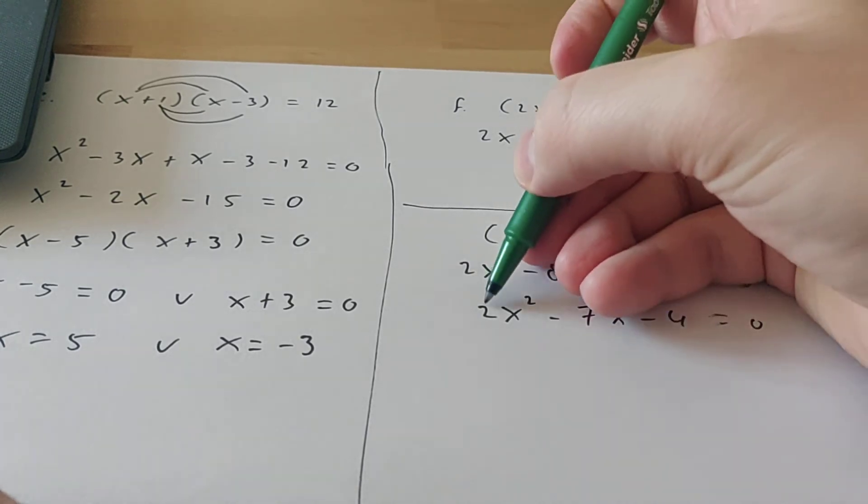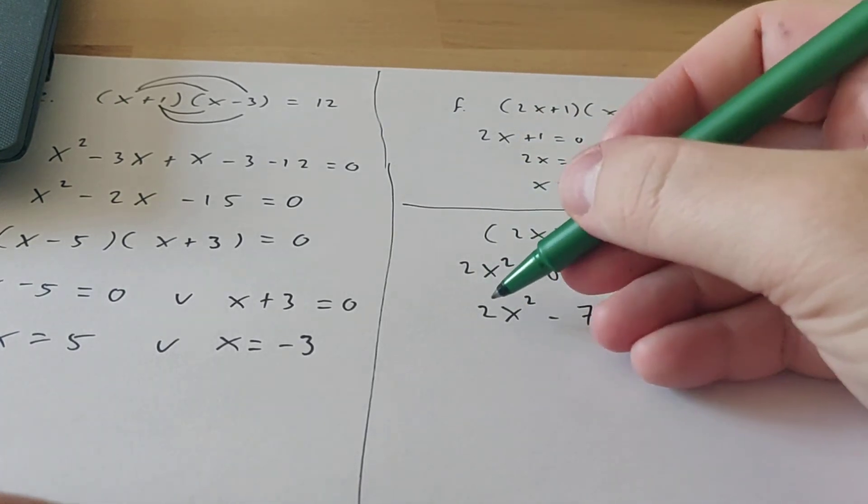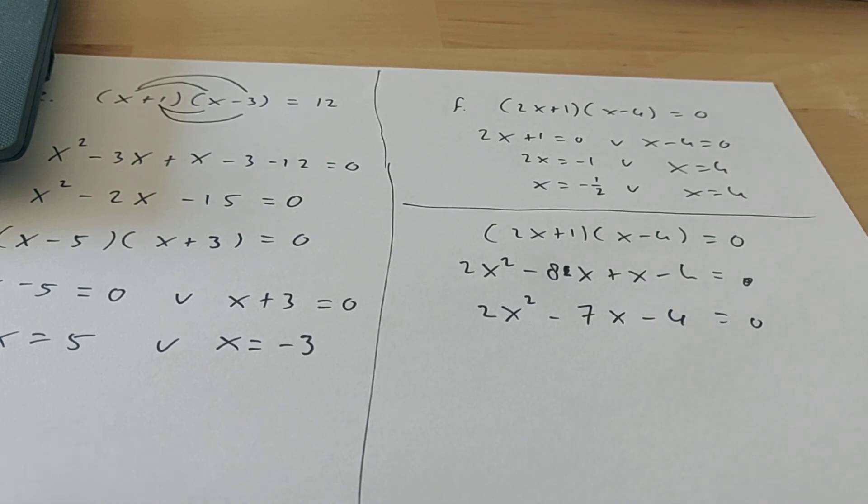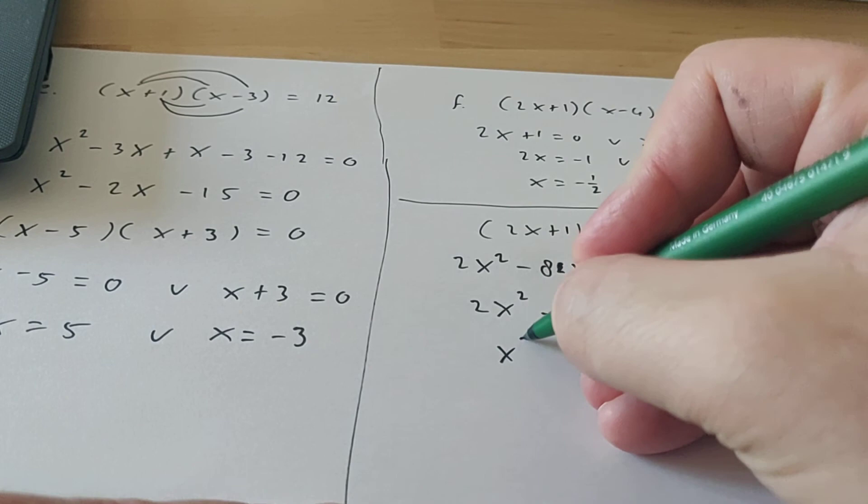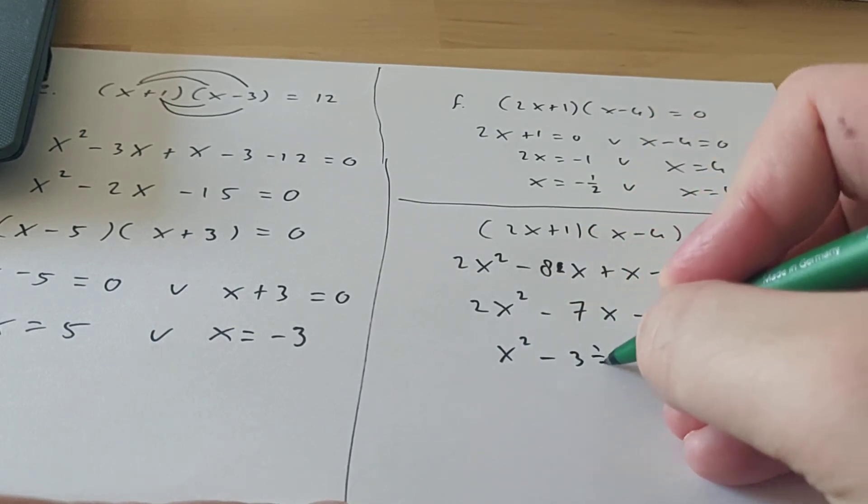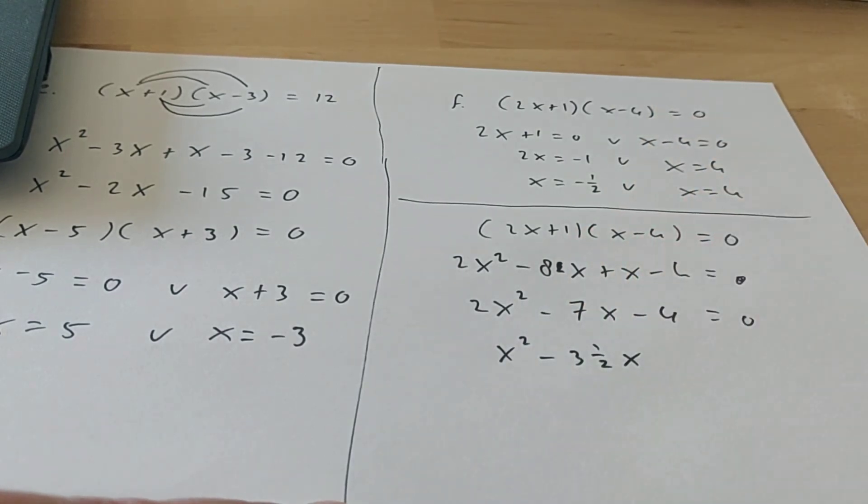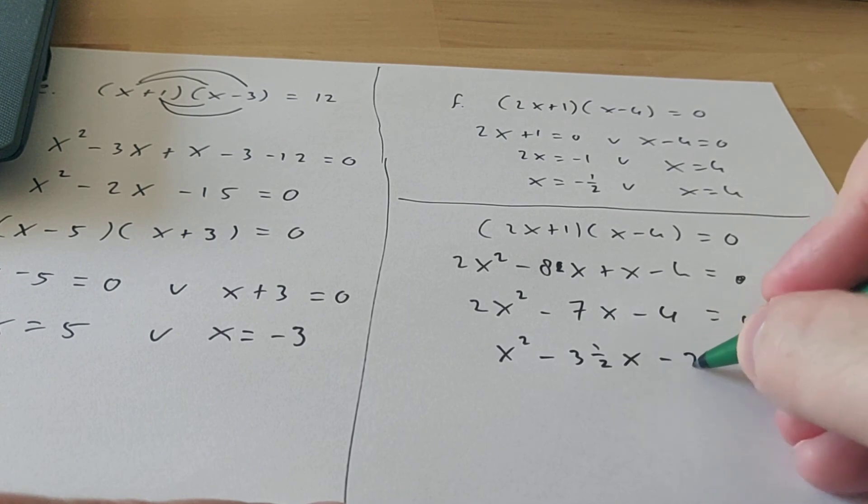Now because there's a 2 here, we cannot use the product sum method. So we have to divide everything by 2 now before you want to do that. So that's already something that we didn't do before. So then you get this. Then we get 3 and a half here. So you get a very annoying number. And you get minus 2 here.